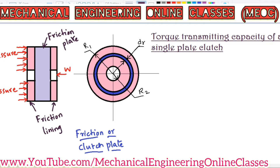We are considering a clutch plate on either sides of which there is friction lining. The pink color on either sides of the clutch plate represents the friction linings, made of a material which will exert more friction. We have considered an elemental ring of radius r and thickness dr. The clutch plate outer radius is r1 and inner radius is r2.